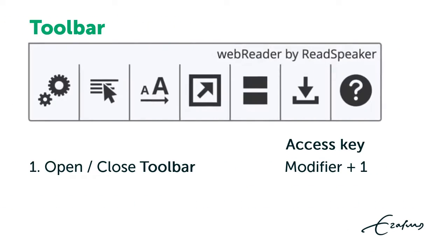Let's look at the toolbar. To open the toolbar you need to use the access key Modifier plus 1. Use Alt plus 1 for Chrome and Edge in Windows. The toolbar may display horizontally or vertically.